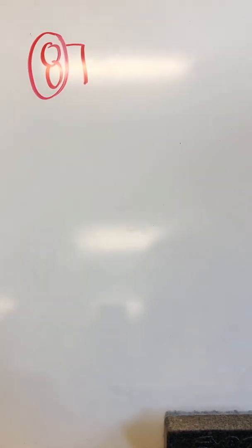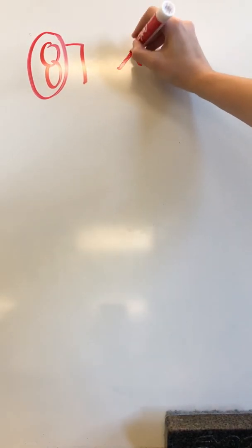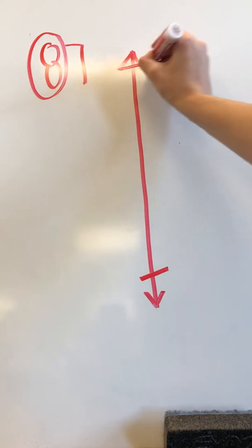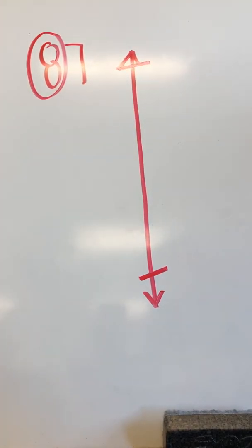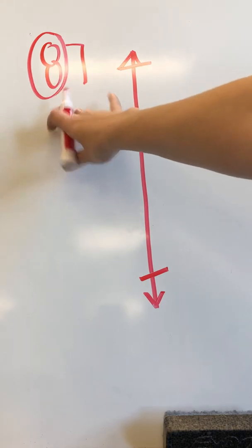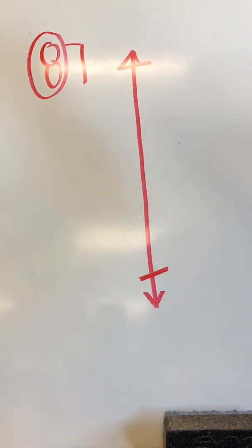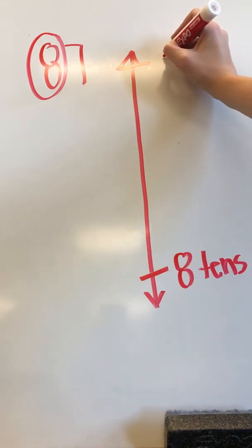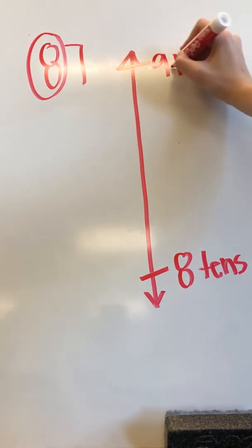So how many tens are in this number? 8 tens. Let's go ahead and make our vertical number line. Go ahead and pause the video and try to label the two endpoints on your number line. Remember the bottom is how many tens are in this number right now. And the top is just one more 10 than that. Did you figure it out? We have 8 tens. And we have, what's one more than 8 tens? 9 tens.